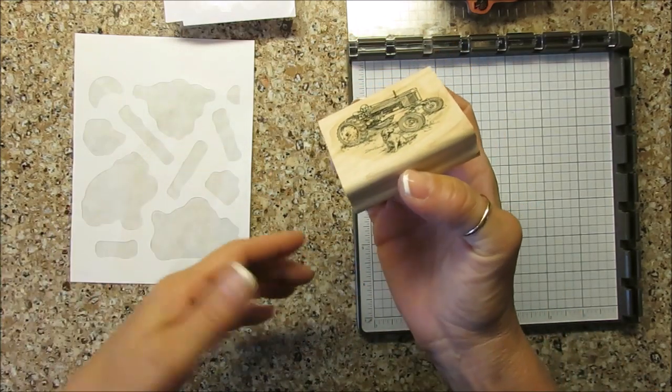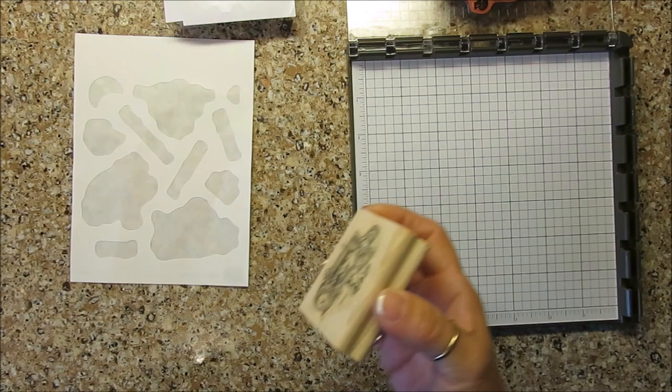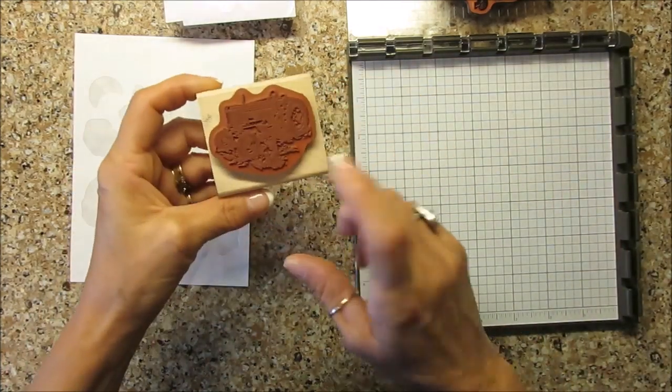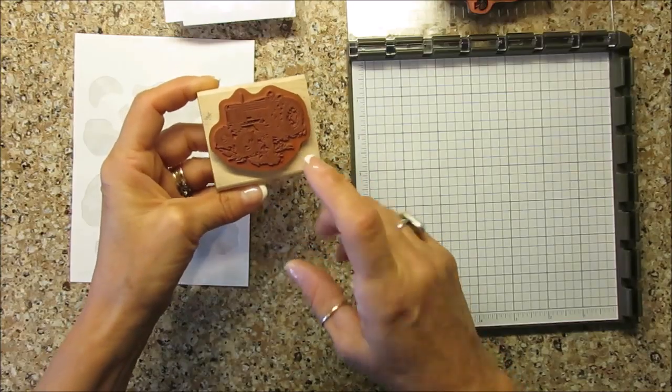If you do have wood stamps, some of you get some wood stamps also before we had the cling or the clear. I'm going to share with you how you can remove that and have a cling.